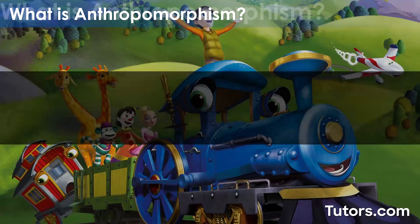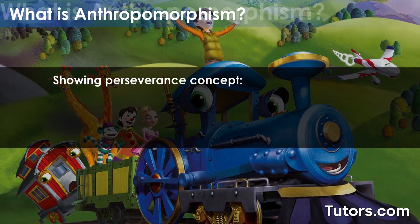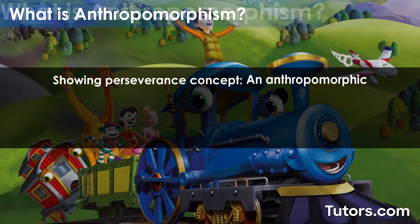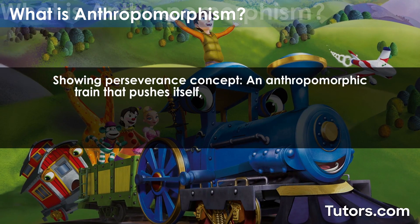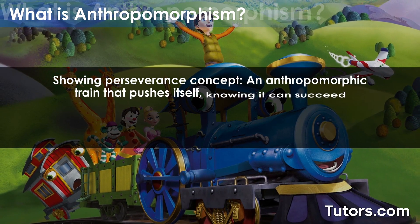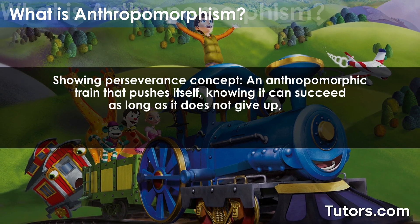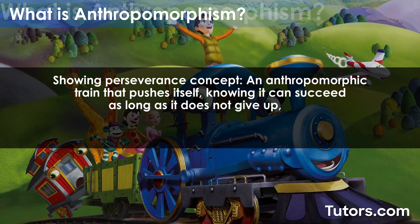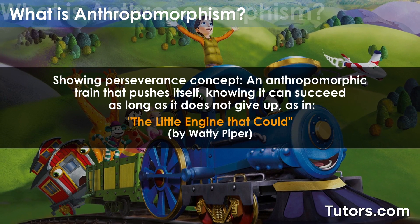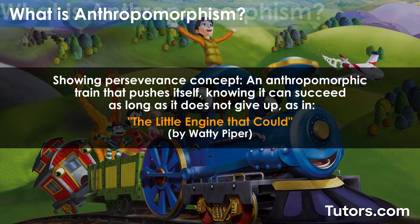For example, perseverance may be a challenging concept for a child to understand. An anthropomorphic train that pushes itself, knowing it can succeed as long as it does not give up, can be easier to grasp, as in Watty Piper's The Little Engine That Could.